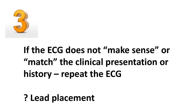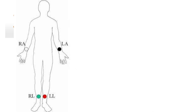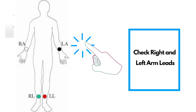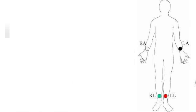Number three: if the ECG does not make sense or match the clinical presentation or history of your patient, repeat the ECG. The first question to ask is: is the lead placement correct? Most commonly, the right arm and left arm leads have been transposed — placed on the wrong arm — which can cause a result of cardiac pathology on the ECG tracing, causing some leads to look reversed.